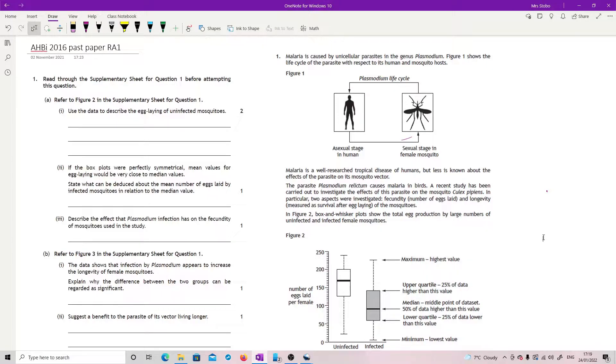Read through the supplementary sheet for question one before attempting the question. So let's look at the supplementary sheet. We're told that malaria is caused by unicellular parasites in the genus Plasmodium. Figure one shows a life cycle with respect to its human and mosquito hosts. So basically saying asexual stage in human goes to the sexual stage in the female mosquito and then comes around.